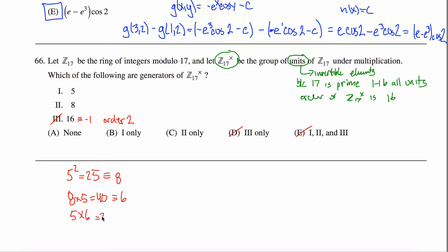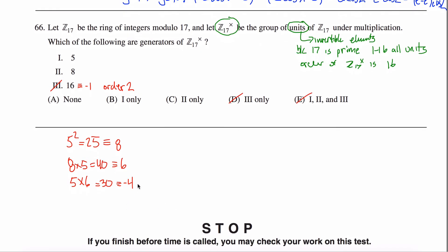5 times 6 is 30, and 30 mod 17 is 13, which is equivalent to negative 4. Negative 4 times 5 is negative 20; adding 17 gives negative 3. Negative 3 times 5 is negative 15; adding 17 gives 2. So counting through, I'm up to the 6th power of 5 and I've reached 2.